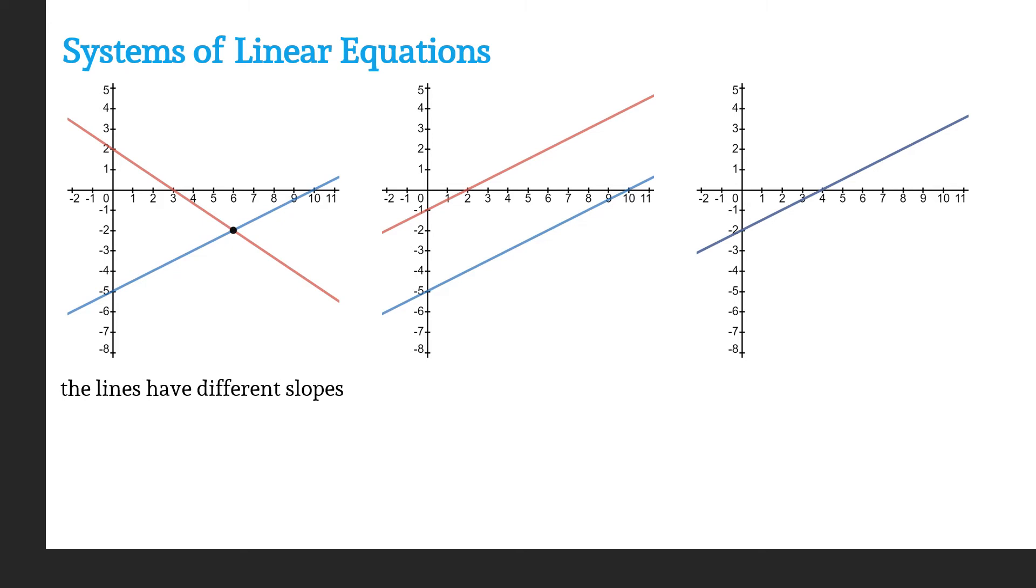If they have different slopes, of course, that's going to cause them to intersect at some point along the way. And it's only going to intersect at one point. Lines will never intersect more than once.